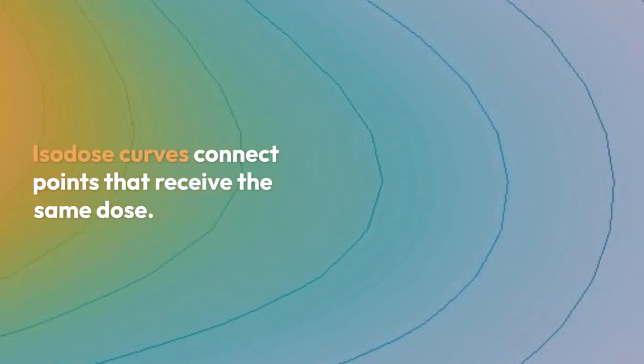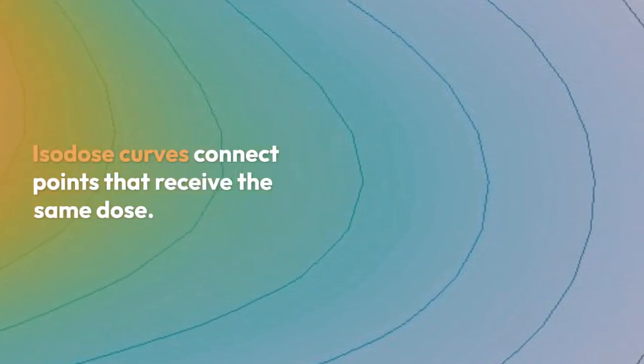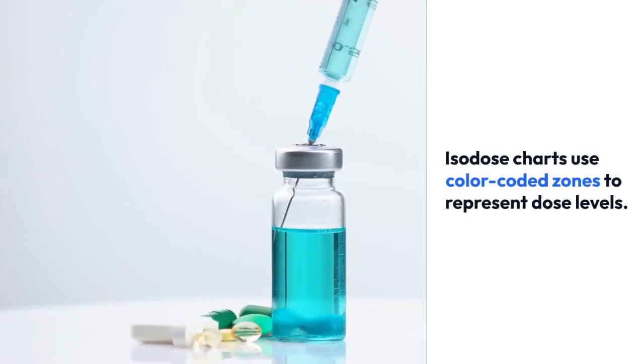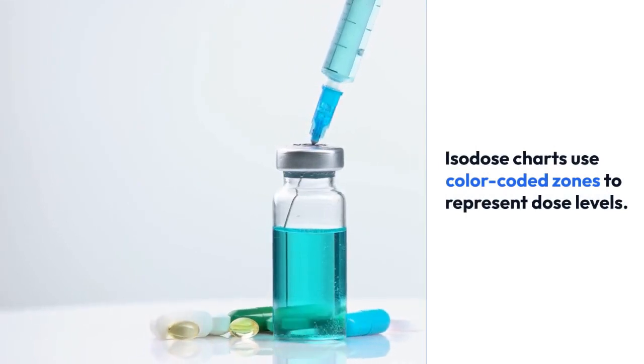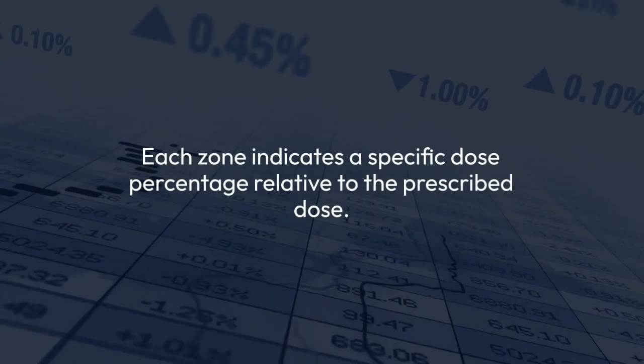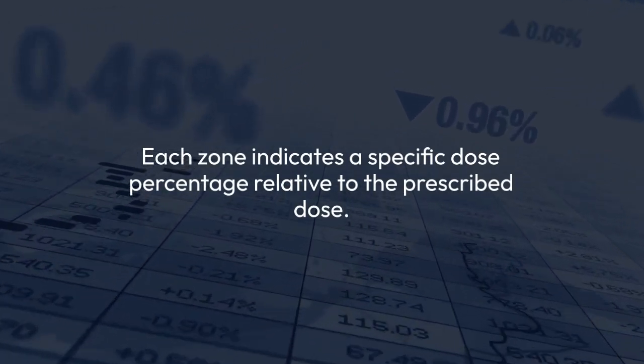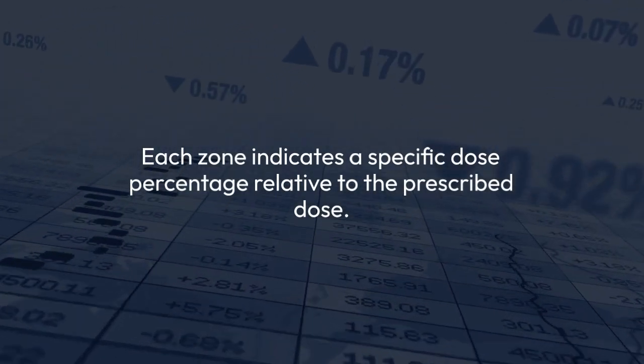Isodose curves connect points that receive the same dose. Isodose charts use color-coded zones to represent dose levels. Each zone indicates a specific dose percentage relative to the prescribed dose.